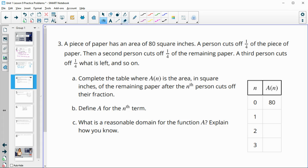Number three, a piece of paper has an area of 80 square inches, and a person is going to cut off one-fourth of the piece of paper. Then a second person is going to cut off another fourth of the remaining paper. A third person is going to cut off a fourth of what is left, and so on. So complete the table, where A is the area in square inches of the remaining paper.